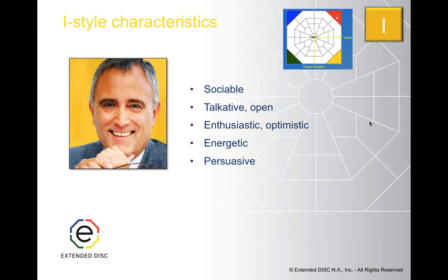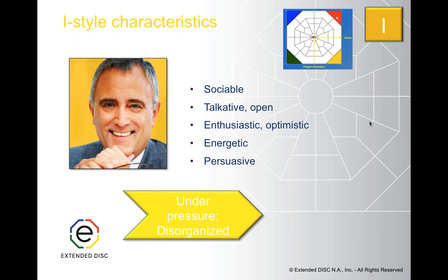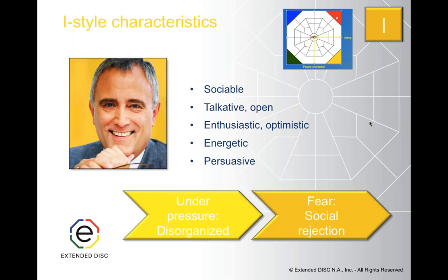I styles are in the bottom right-hand quadrant of the DISC diamond, between active and people orientation. Just some attributes to describe them: they're very sociable and enthusiastic, energetic and persuasive, very talkative and open as well. Under pressure, they can appear disorganized, but that's only because they're so concerned about people and feelings that the details sort of fall through the cracks. I's fear social rejection and never want to be on the outside looking in.